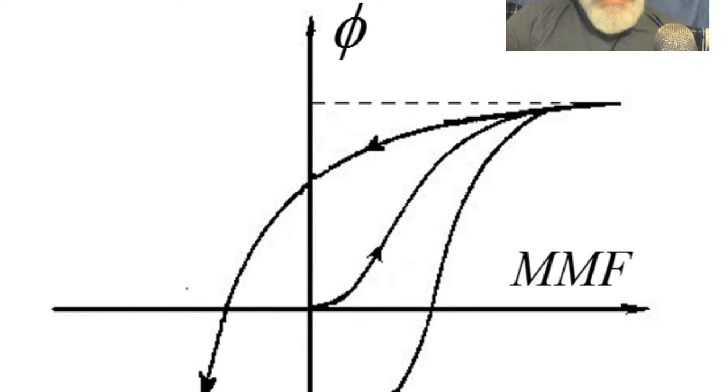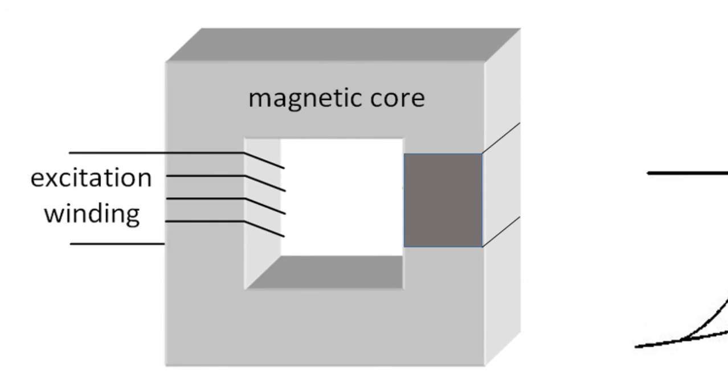Well, when we increase that MMF starting here at zero, the flux of course will increase until we reach saturation. But when we reduce the MMF, we reduce the current in the coil, the flux of course decreases, that at the point in which the current in the coil is zero, the flux in the circuit is not zero anymore. The piece of iron on the right has become permanently magnetized. It is a permanent magnet.